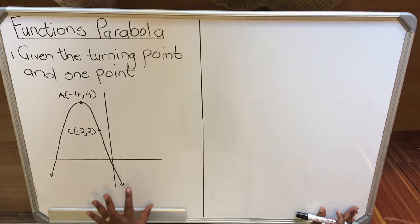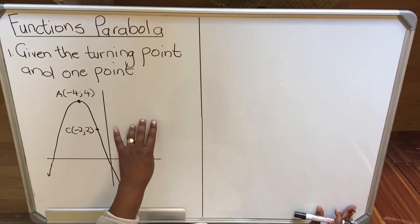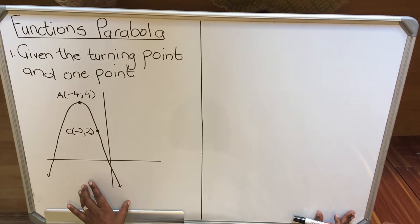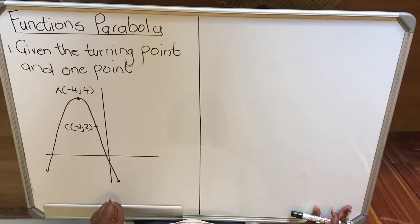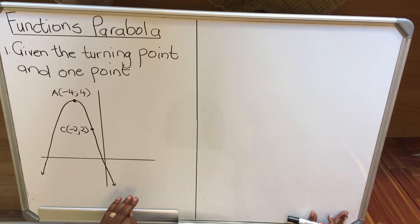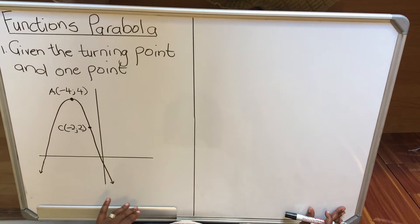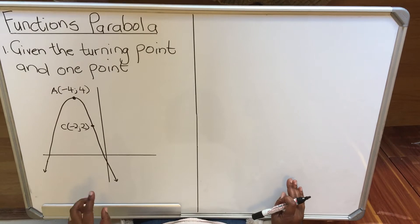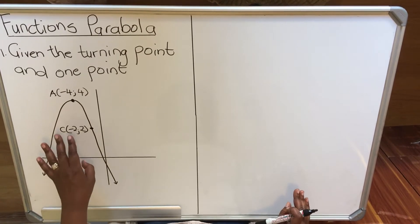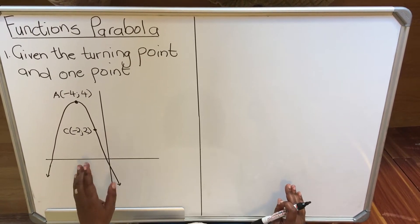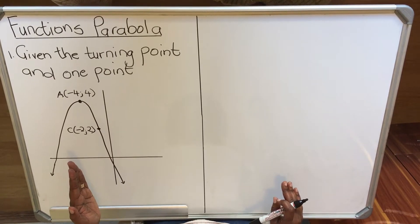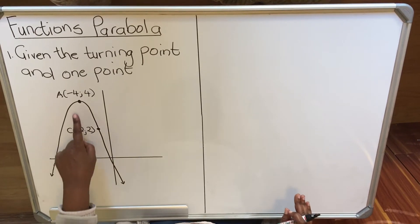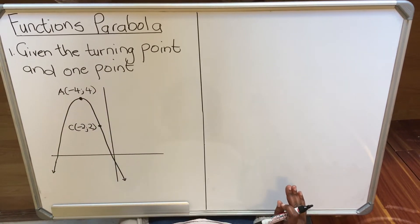Hello Grade 11s. We're going to look at functions, particularly a parabola, but we're going to look at a section where you are given coordinates and you are asked to find the equation of the parabola. There are three different ways that can be done. The first one: they can give you the turning point, but the only time you say it's a turning point is when they tell you it's a turning point. The question paper will tell you that that point is a turning point, and then they give you one other coordinate.